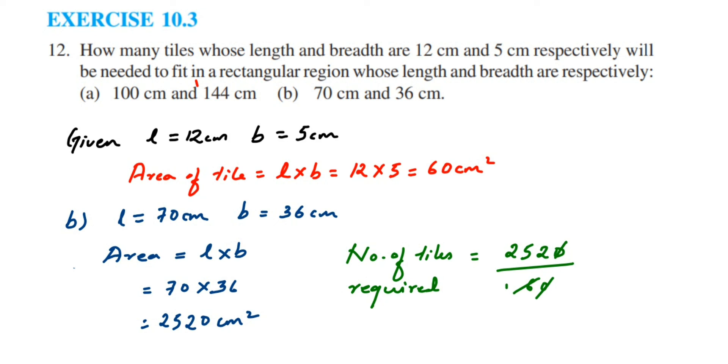Now 25 doesn't go, right? So 6 4s are 24. Now 25 minus 24 is 1. 1 is the remainder here. So remainder, I'm going to put it here along with 2. That makes the number 12. So 6 2s is 12, which is equal to 42. So we require 42 tiles for the second one.